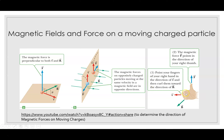To apply the rule: first extend your right hand with your fingers pointing forward in the direction of velocity of the charge. Then curl your four fingers to indicate the direction of the magnetic field, moving through the smallest angle. Your thumb is now pointing in the direction of the magnetic force exerted on a positive charge. Right-Hand Rule Number 1 is used for positive charges — your thumb indicates the direction of force.